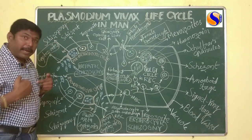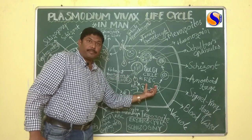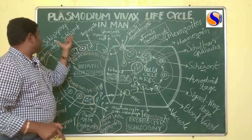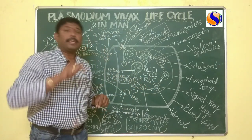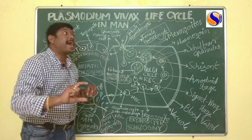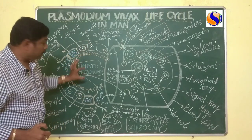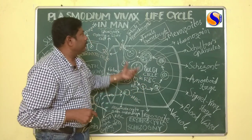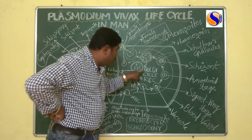This Schizogony in man completes in the liver cell and at the same time in the RBC. The life cycle which completes in the liver cell is called Hepatic Schizogony, and the life cycle which completes in the RBC is called Erythrocytic Schizogony, also called the Golgi Cycle.